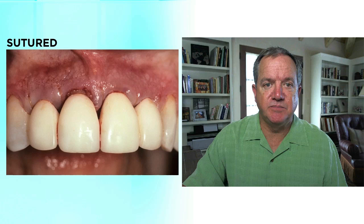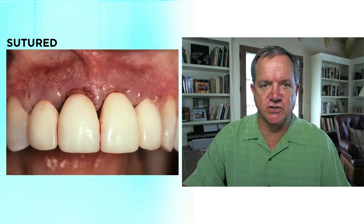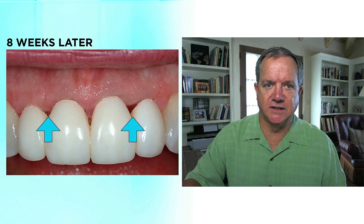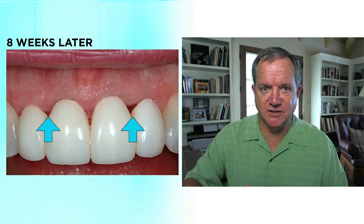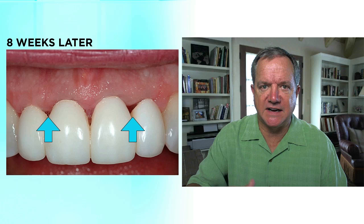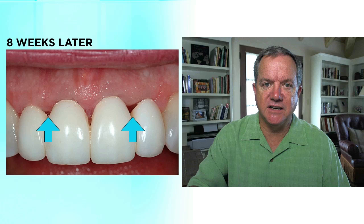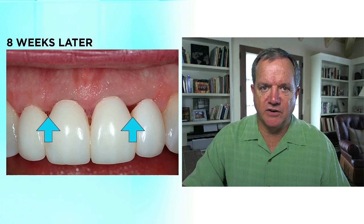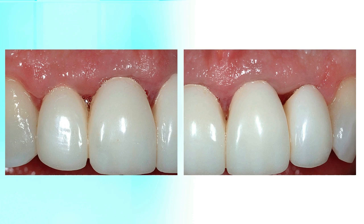Typically I would wait eight to ten weeks before moving the margins into a subgingival position, but in this patient unfortunately she got some necrosis of the flap proximally, so at eight weeks there was no papilla. We know the bone is in the correct position because the flap was there. The papilla will come back four and a half to five millimeters above that bone — but you have to wait, and this patient is going to take months before she's ready for final restorations.